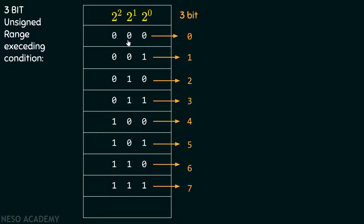We can list all combinations: 000, 001, 010, 011, 100, 101, 110, 111 — giving us values from 0 to 7 for a 3-bit representation. The minimum value would be equal to 0 and the maximum value is equal to 7. And this is our range.